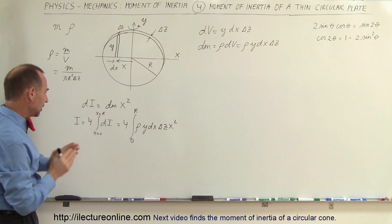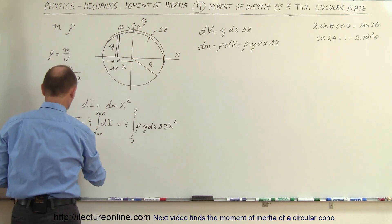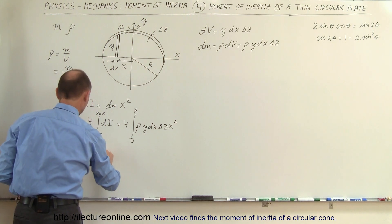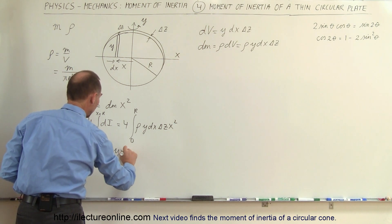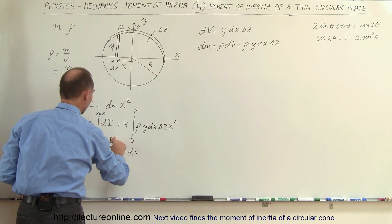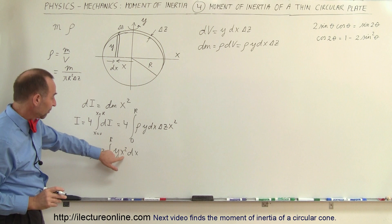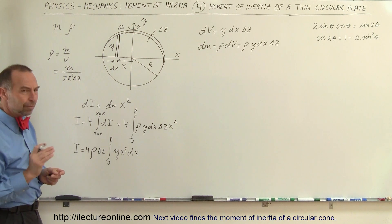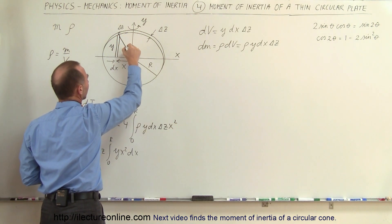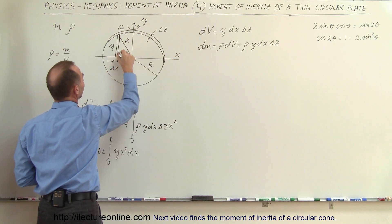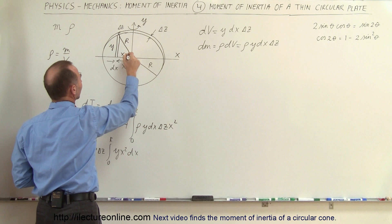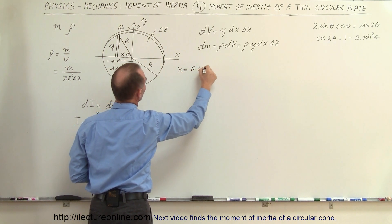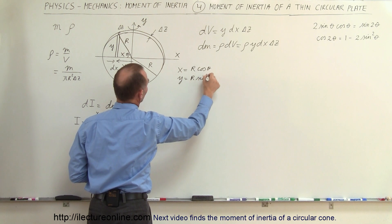Let's move the constants outside the integral to make it cleaner. I equals four times the density times delta z times the integral of y times x squared dx from 0 to r. We have two variables y and x, so we introduce a trigonometric substitution. Drawing a line from the origin to the edge gives the radius r. If the angle is theta, then the adjacent side is x and the opposite side is y, so x equals r cosine theta and y equals r sine theta.